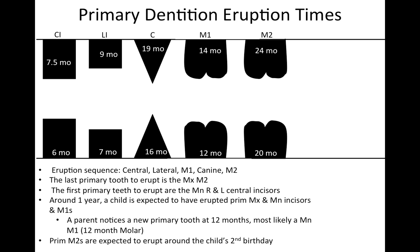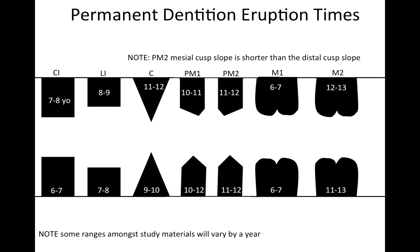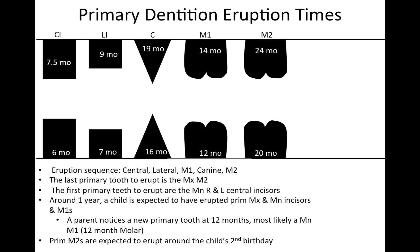I've got a chart for primary dentition eruption times and permanent dentition eruption times. You've got to do a little legwork memorizing these numbers. I recommend getting a piece of paper and drawing these pictures out. We'll start on the primary dentition, and I'm not necessarily going to go through the timeframe for each tooth since I'm assuming you've studied that already. If you'd like, you can pause the video and look through those. I'm going to go through a couple different types of questions that this drawing will help you with.